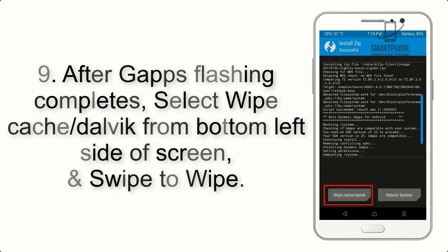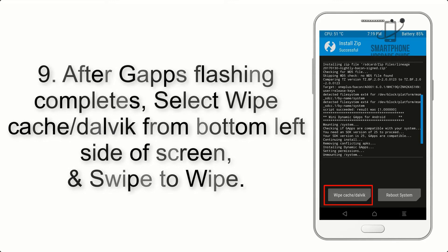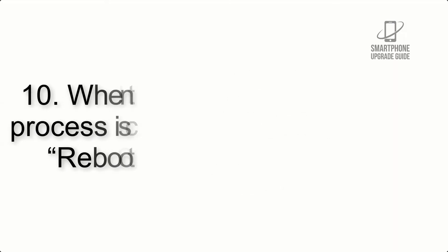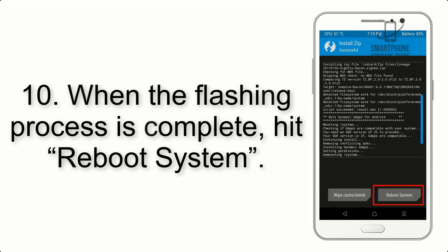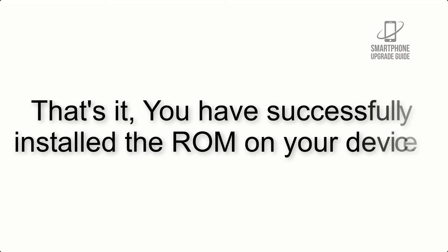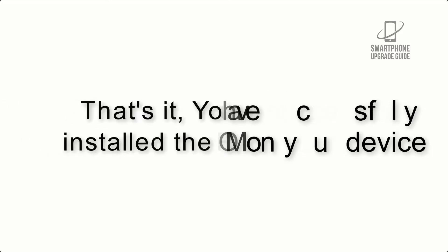Step 8: Flash the GApps zip package in the same manner. Step 9: After GApps flashing completes, select Wipe Cache and Dalvik from the bottom left side of the screen and swipe to wipe. Step 10: When the flashing process is complete, hit Reboot System. That's it — you have successfully installed the ROM on your device.